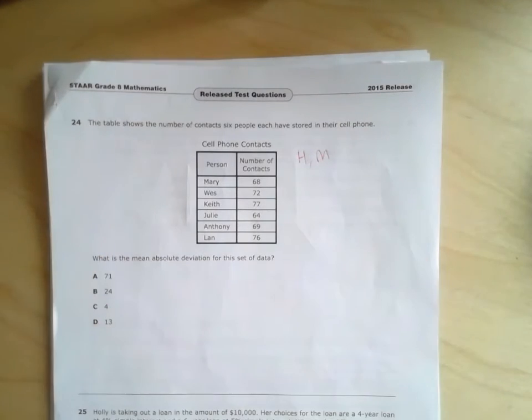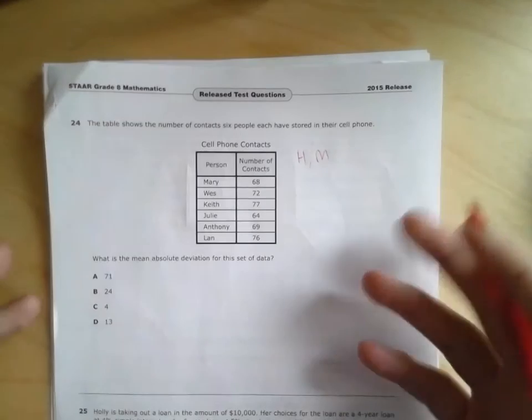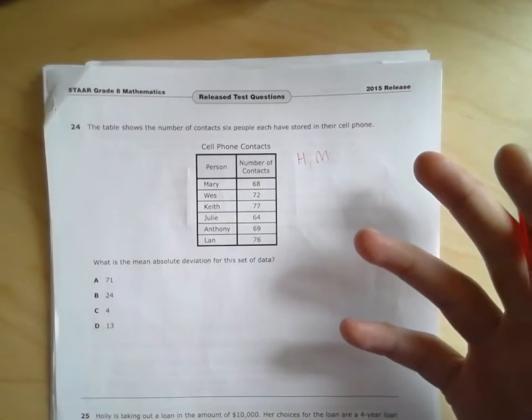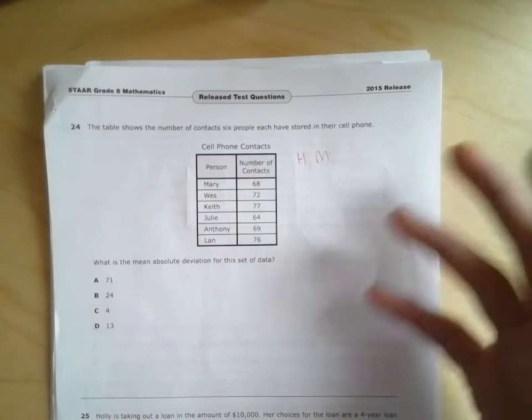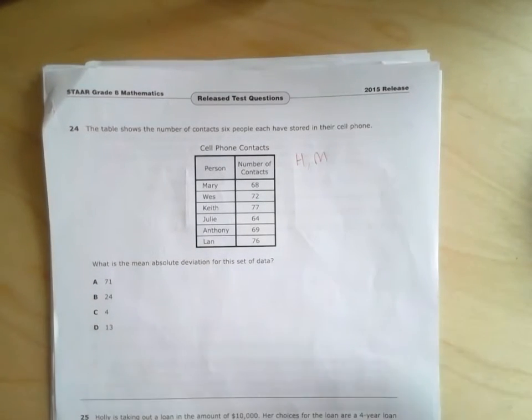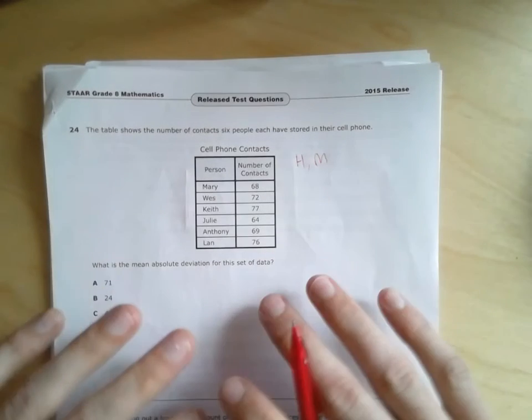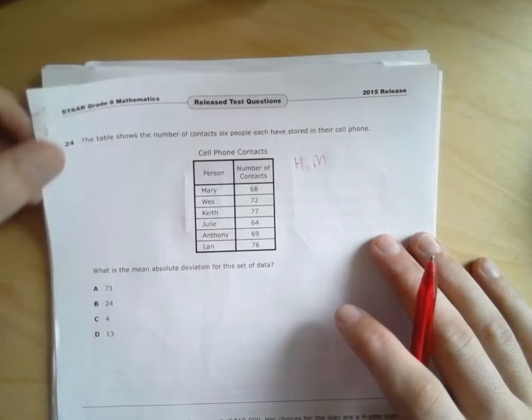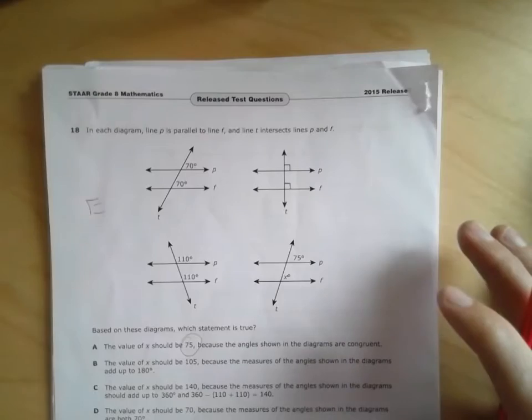I would consider mean absolute deviation medium to hard difficulty, because one, you've got to remember the strategy of finding the average and then the difference from the average and then the average of that difference. But even if you remember the strategy, there's a lot of room for error in this type of problem. So you don't want to get stuck there.